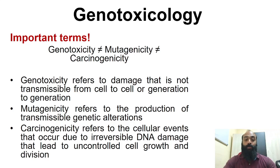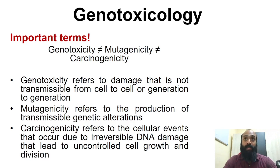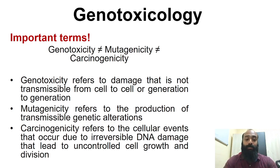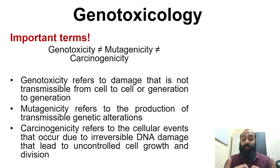Coming to the important point — these terms must be carefully distinguished: genotoxicity, mutagenicity, and carcinogenicity should not be used interchangeably. Genotoxicity refers to damage that is not going to be transmissible from cell to cell or generation to generation — it is just the damage being done to DNA. That damage can be repaired, and the cell can either undergo apoptosis to eradicate that damage or there will be cell repair mechanisms which can repair the damaged DNA. Mutagenicity, on the other hand, refers to the production of transmissible genetic alteration — the damage cannot be repaired and escapes the DNA repair machinery, so the damaged DNA gets propagated into daughter cells.